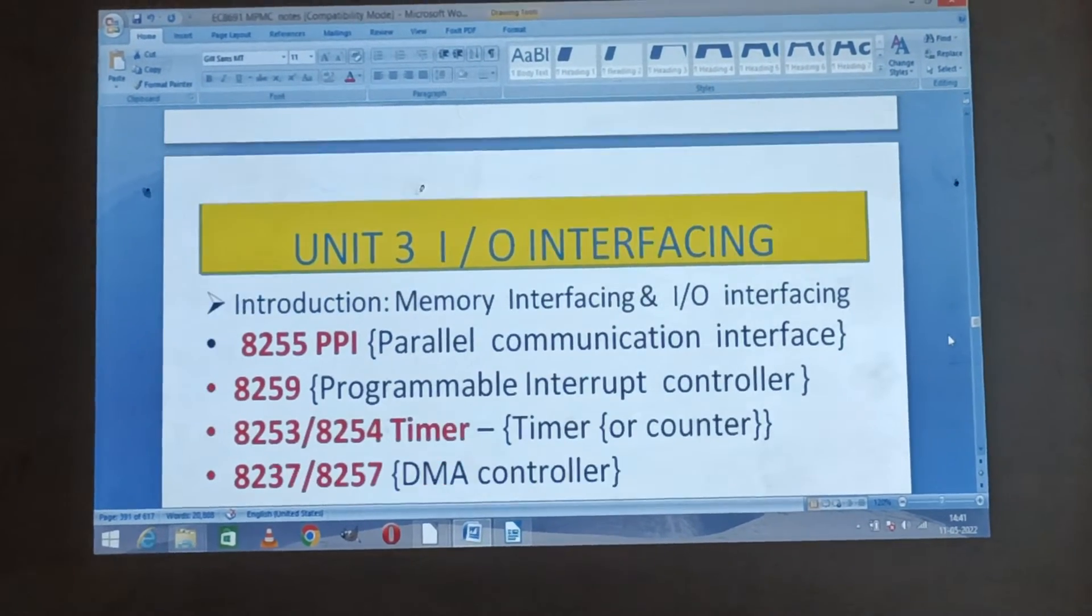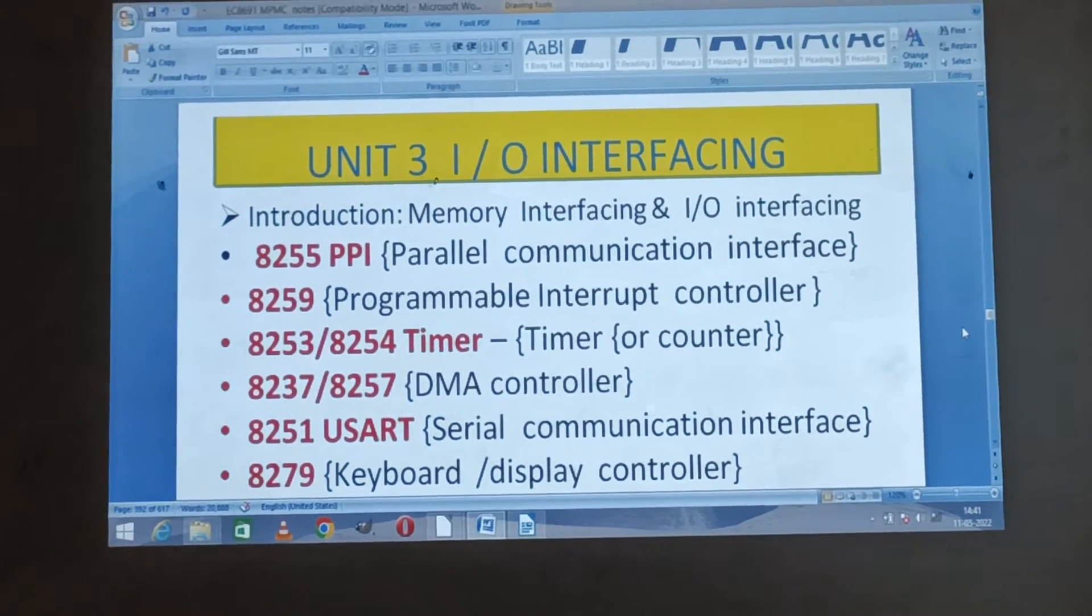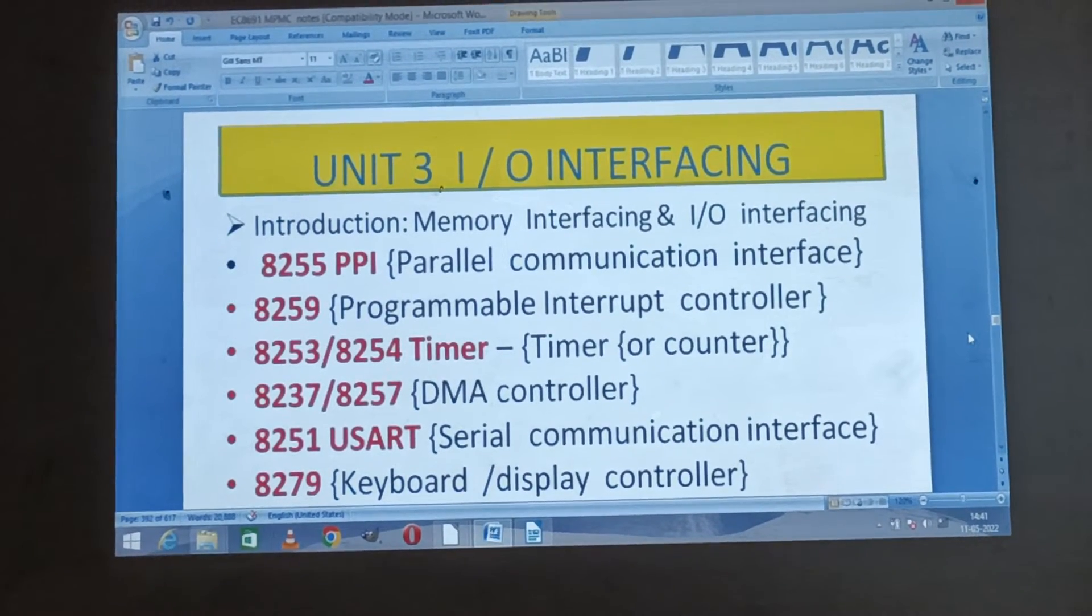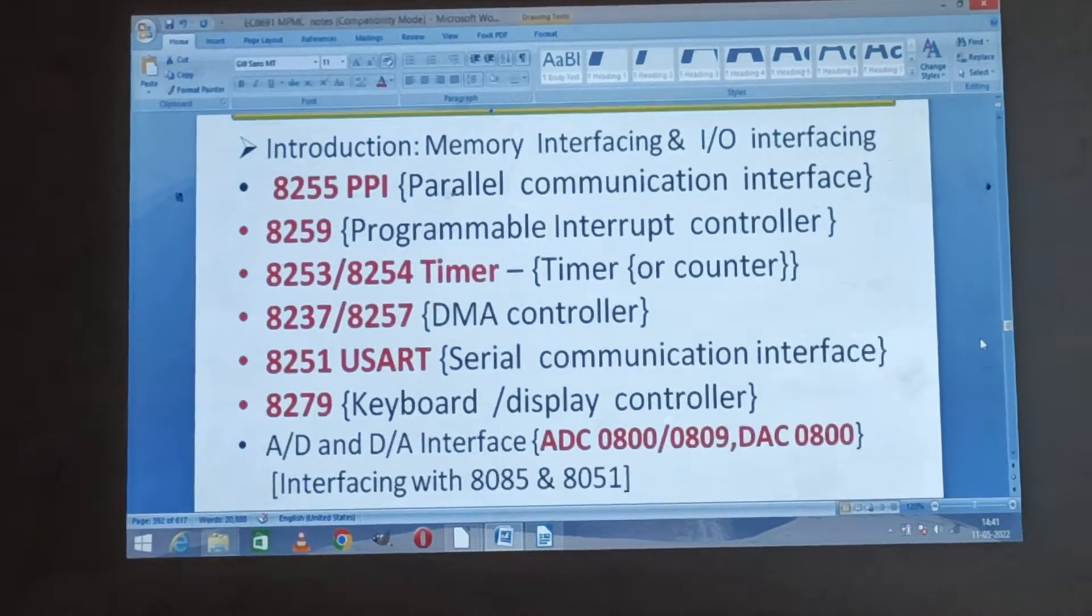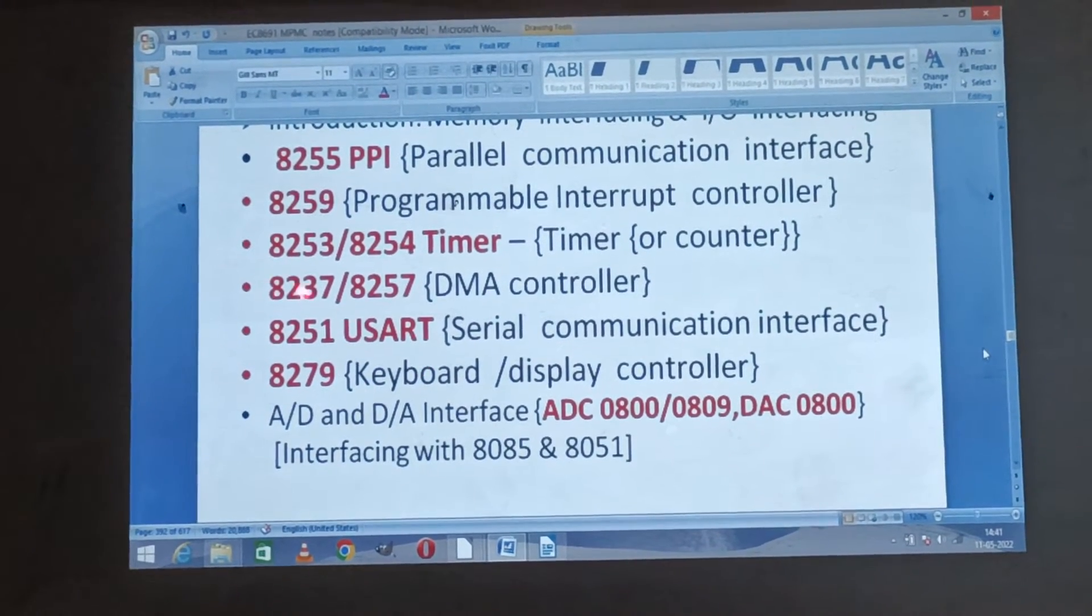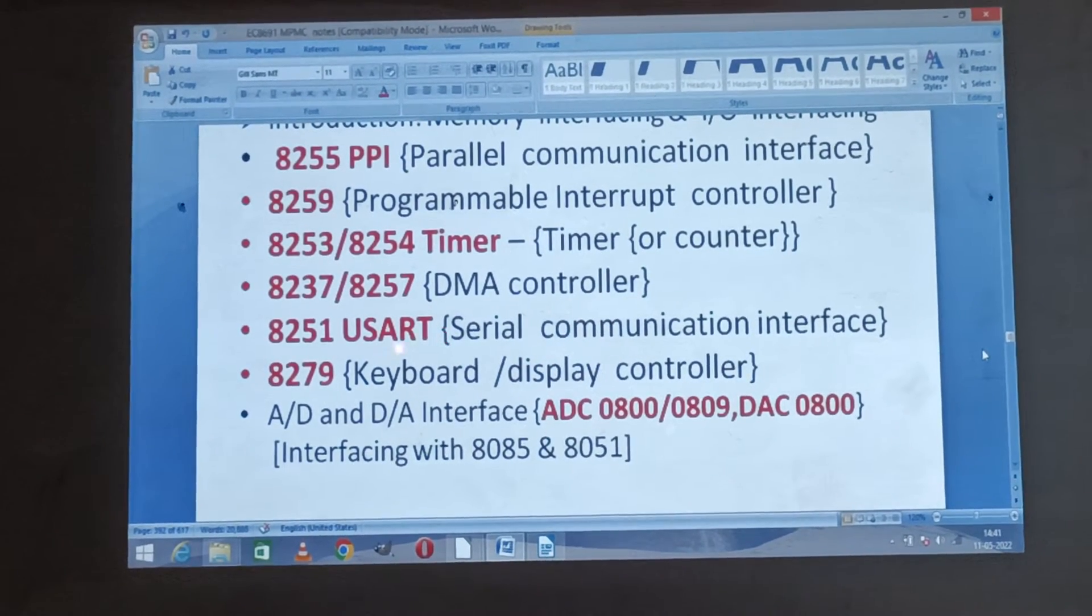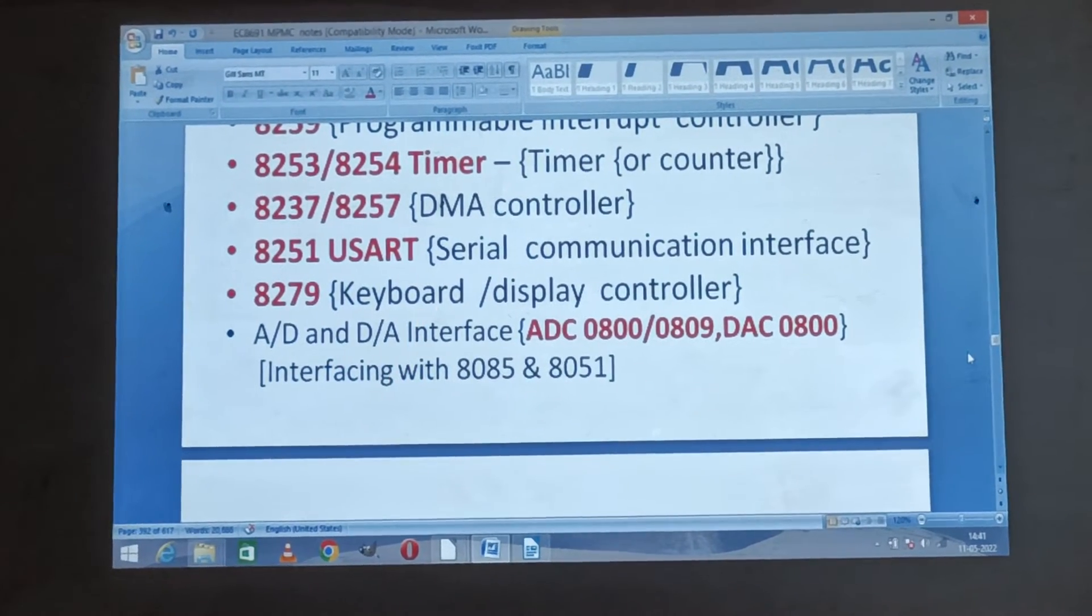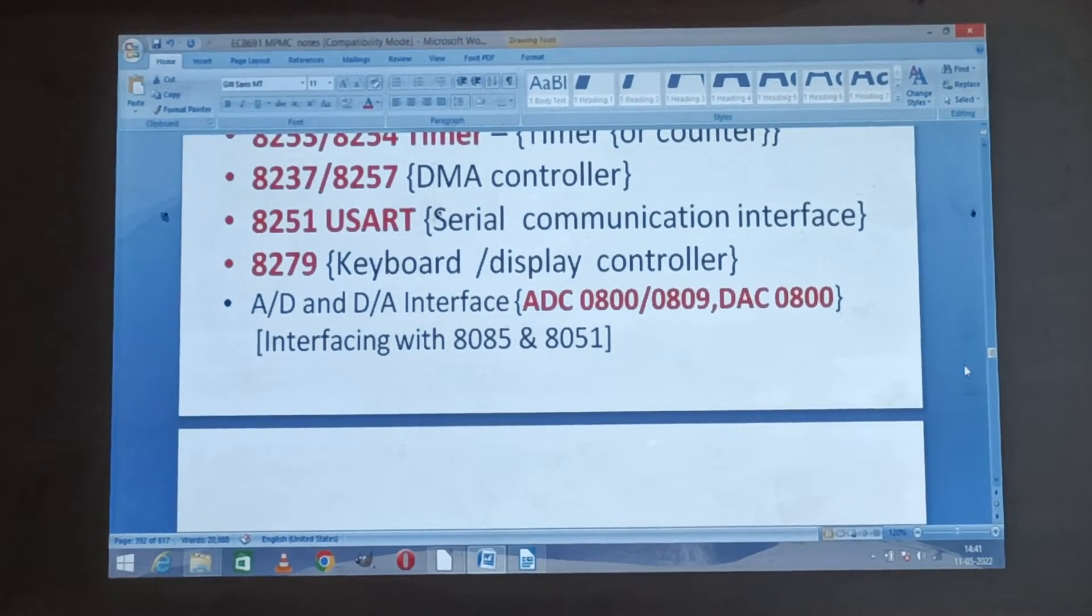So Unit 3 title is Input Output Interfacing, I/O interfacing. The introduction of memory, introduction first one memory interfacing and input output interfacing. 8255 programmable communication interface and 8259 programmable interrupt controller, 8253/8254 timer controller and 8237/8257 DMA controller, 8251 USART universal synchronous asynchronous receiver transmitter IC, 8279 keyboard display controller. Next one is analog and digital and digital to analog interface using ADC 0800, 0809 and DAC 0800.